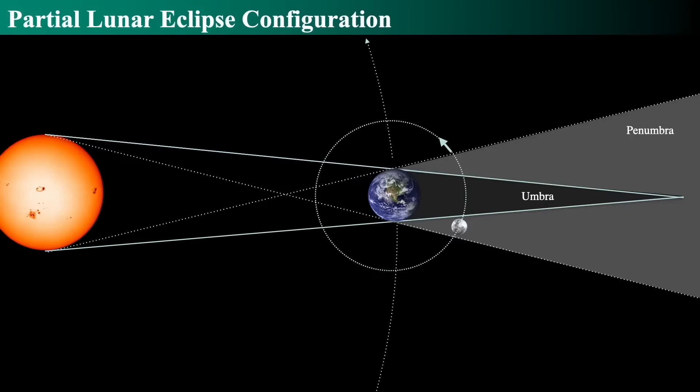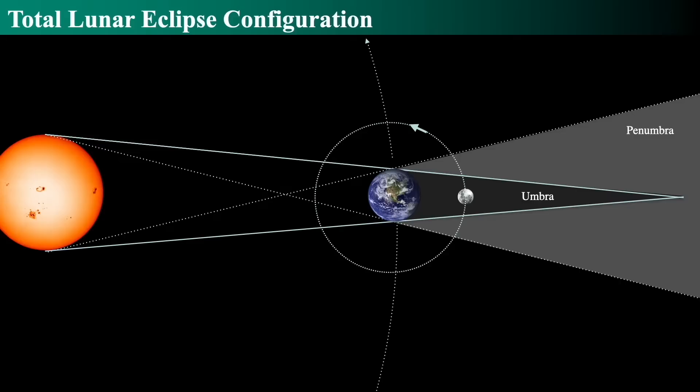The penumbra just looks a little dimmer, but the umbra is extraordinarily dark. So if we go ahead a little bit more in time, as the Moon goes around in its orbit, if it passes fully into the umbra, then it's called a total lunar eclipse.